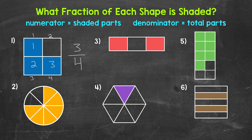Let's move on to number two, and we will start with the denominator. So how many total equal parts has the whole been divided into? Well, one, two, three, four, five, six, seven, eight. So we have a denominator of eight here.